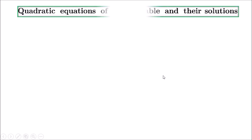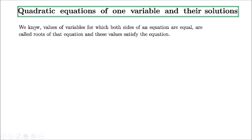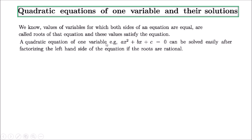Before solving the math, we need to know what a quadratic equation of one variable is and how to find its solution. The values of variables for which both sides of an equation are equal are called roots of the equation, and these values satisfy the equation. A quadratic equation of one variable takes the form ax² + bx + c = 0. Because the power of x is 2, the whole equation is called a quadratic equation.